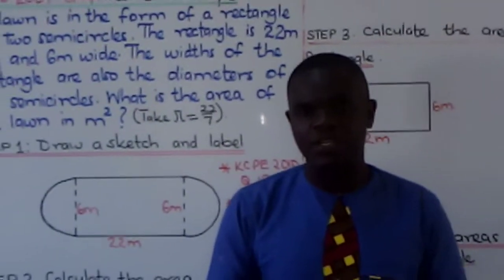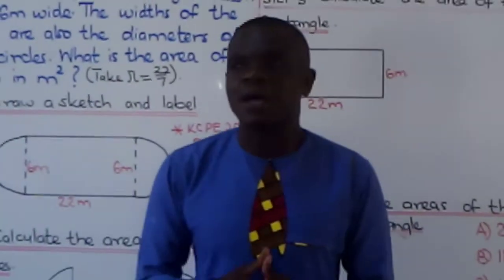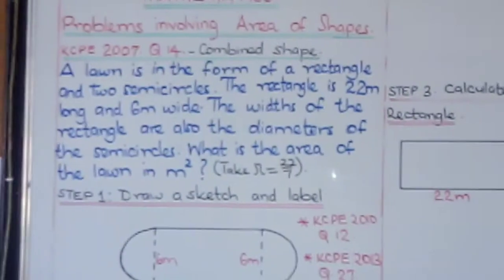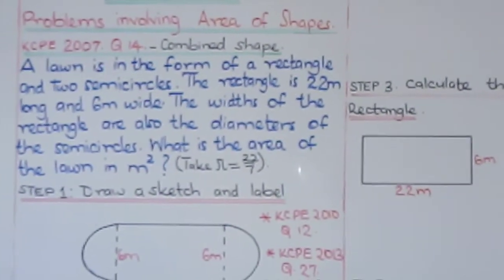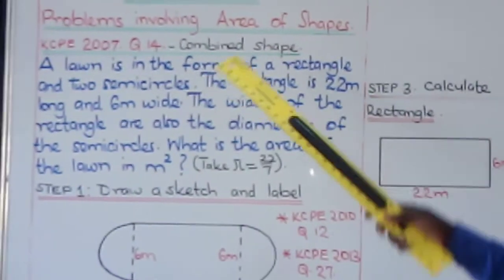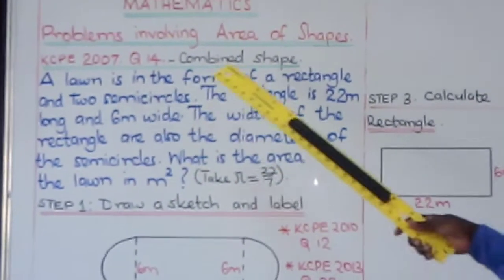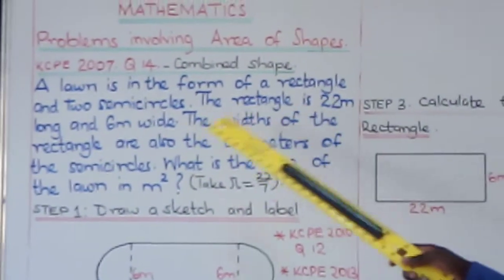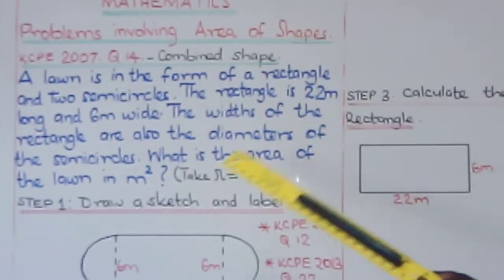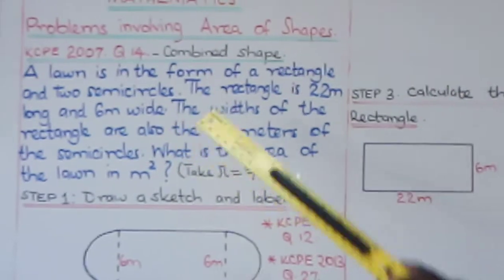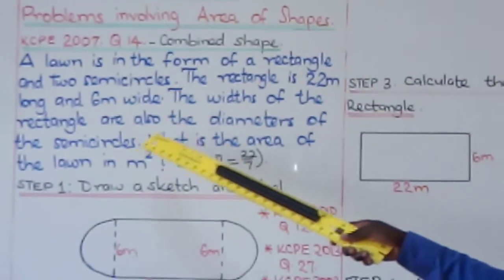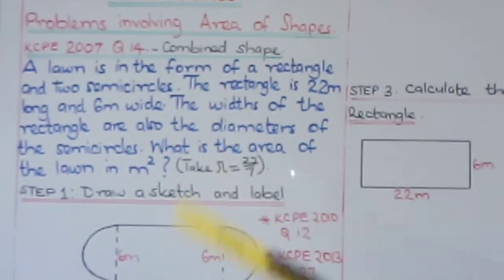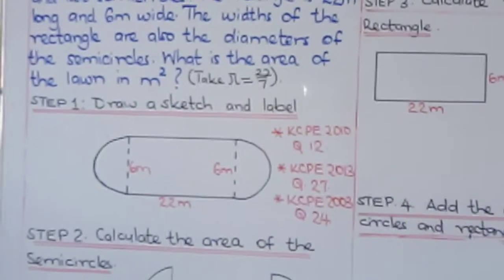It's another fresh day. Welcome to Mathematics — today we are dealing with problems involving area of shapes. I have selected some questions from KCP papers. I want to begin with KCP 2007 question number 14. It's about combined shapes: a lawn in the form of a rectangle and two semicircles. The rectangle is 22 meters long and 6 meters wide. The widths of the rectangle are also the diameters of the semicircles. What is the area of the lawn in square meters? Take pi as 22 over 7.